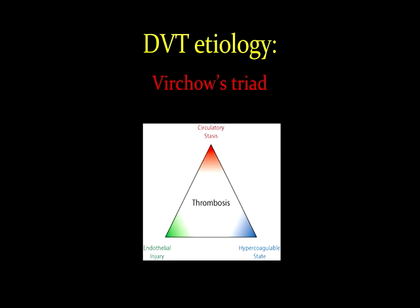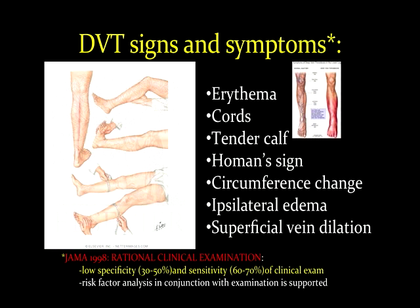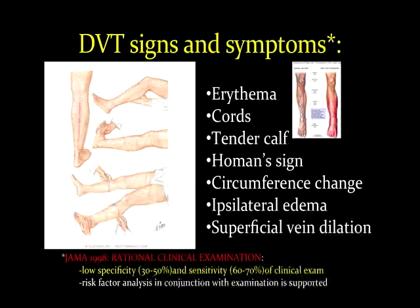We're all familiar with Virchow's triad of endothelial injury, circulatory stasis, and hypercoagulant state as being the leading risk factors leading to thrombosis. Commonly we hear about signs and symptoms of deep venous thrombosis such as erythema and Homan's sign, but you need to keep in mind that there is a low specificity and sensitivity of the clinical examination for identifying deep venous thrombosis properly.